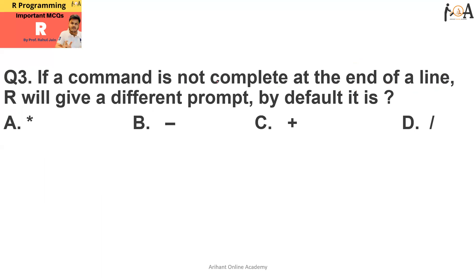Question number three is if a command is not complete at the end of a line, R will give a different prompt. By default, it is what? If command is not completed at the end of line, then by default R is going to give a different prompt. By default, it is the addition sign, the plus symbol. That is option C, the correct answer.